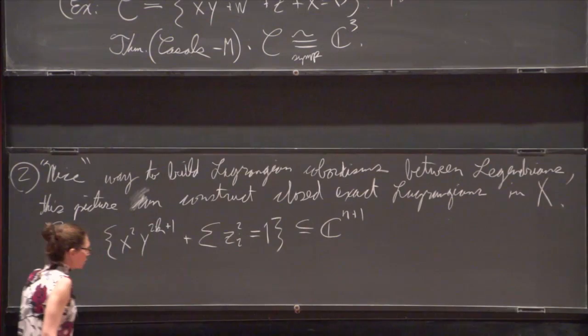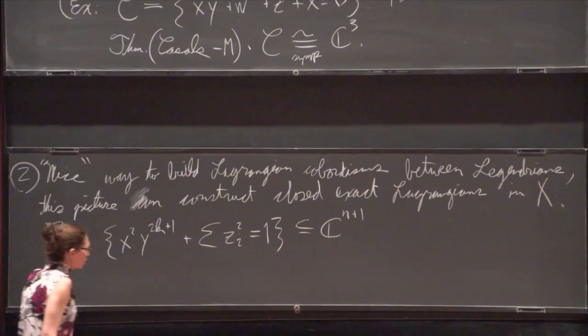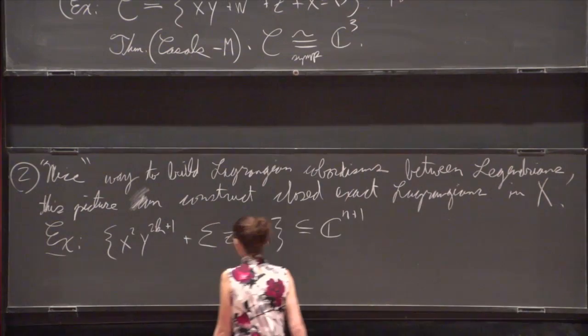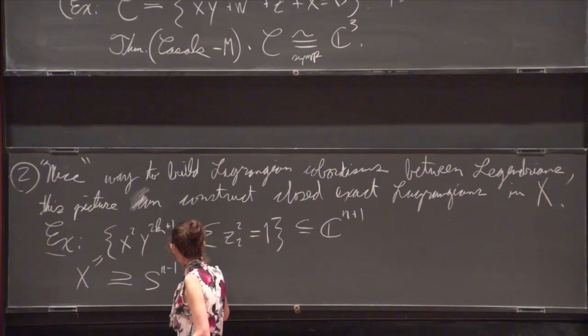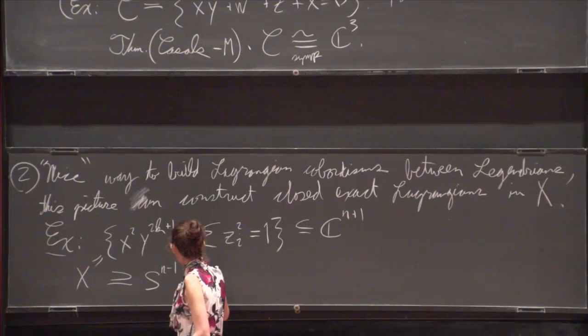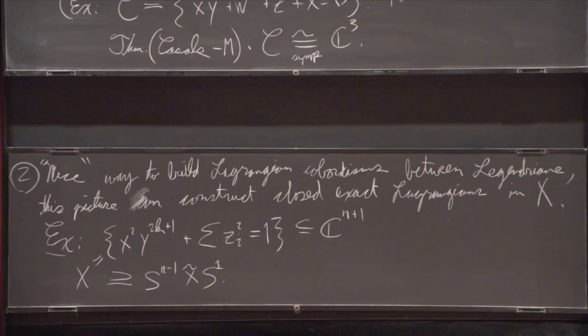So this thing doesn't have any Lagrangian spheres, I believe. Actually let me take that back, pretty sure that's true but I'm not totally sure. But what it does have is, so if I call this X, contained in X is an exact Lagrangian copy of S^(N-1), the non-orientable kind of twisted product with S^1, like Klein bottle.